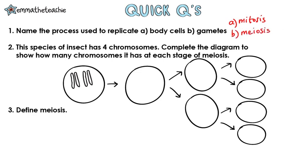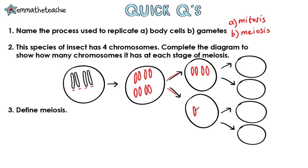Two: this species of insect has four chromosomes. Complete the diagram to show how many chromosomes it has at each stage of meiosis. So the body cell has four chromosomes. When the genetic information doubles, we end up with eight. Then, after the first division, it halves again, so we have four. And after the second division, it halves once more, so we have two chromosomes in each cell.